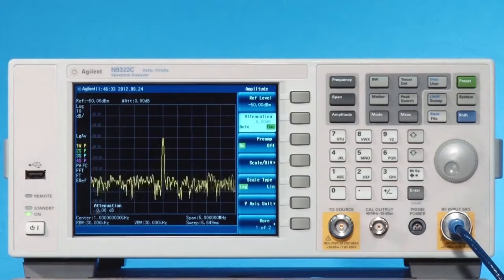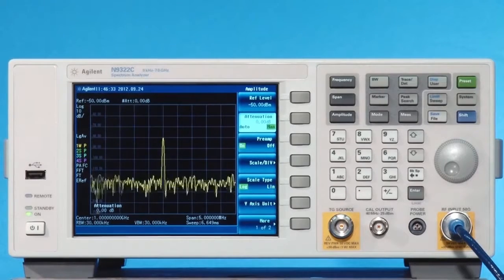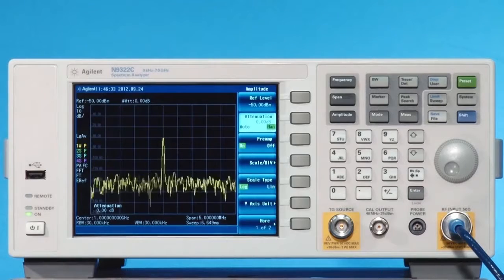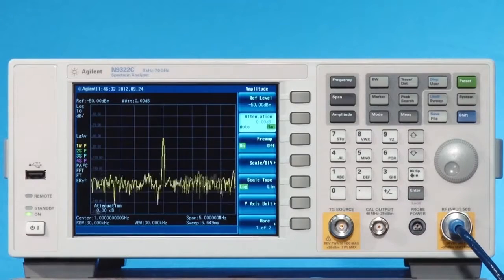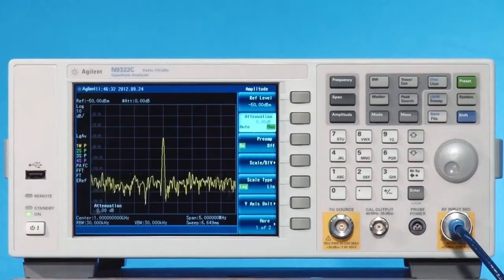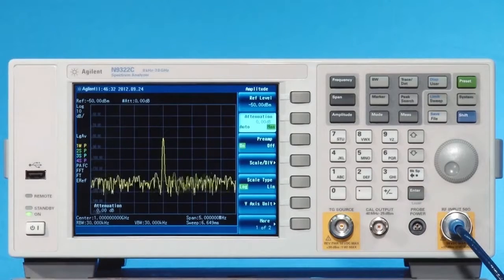To further reduce the noise level of the analyzer, you can narrow the resolution bandwidth, RBW. The RBW settings affect the level of internal noise without affecting the amplitude level of the input signal.